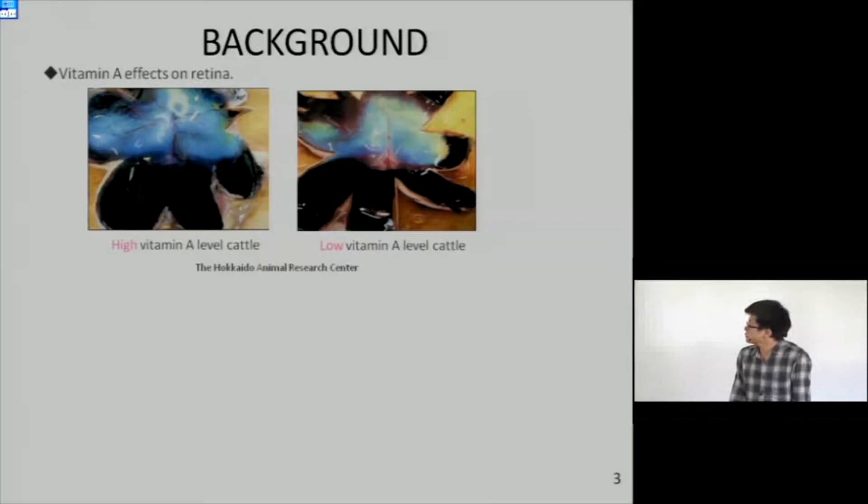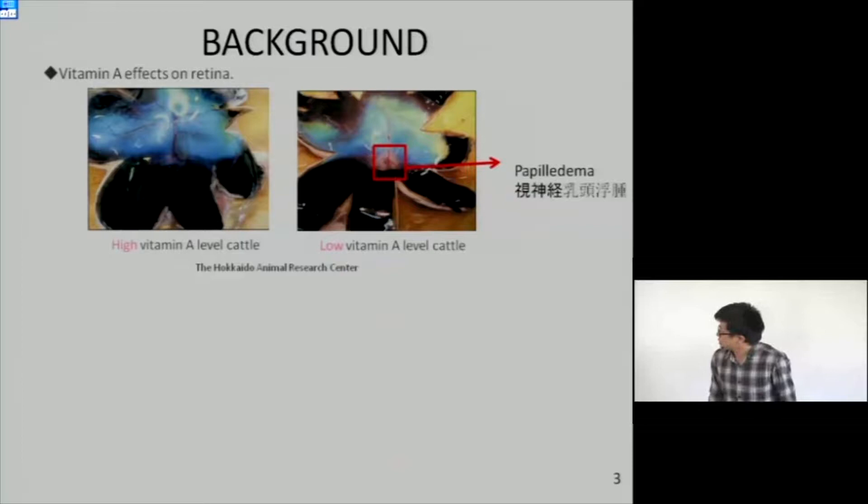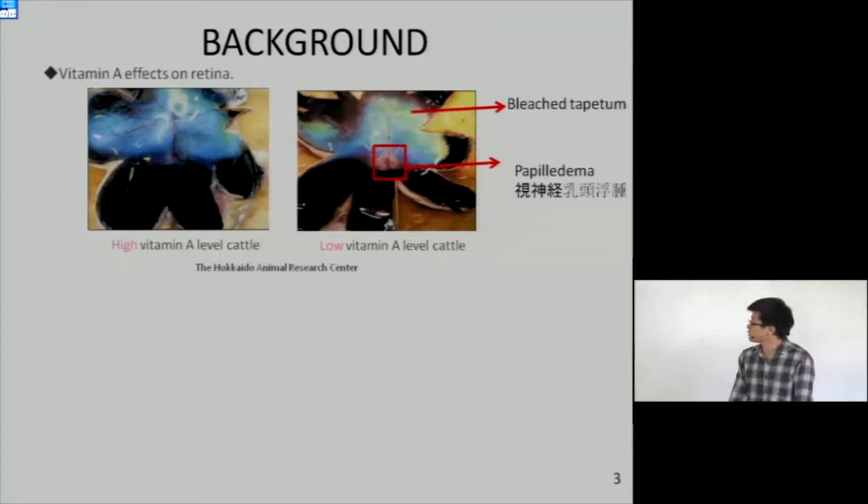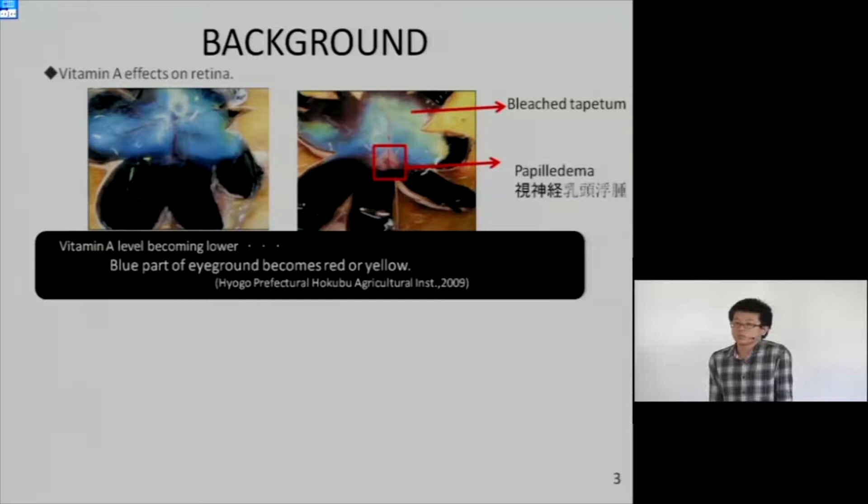Here I show two images of the cutted eyeball, comparing healthy cattle and cattle suffering from vitamin A deficiency. In the right side, you can see mainly two kinds of difference. First is the papilledema, the swelling of the optic nerve, which is obviously different from the left side. The other difference is the bleached tapetum. You can see the color changed from blue to yellow and some reddish.